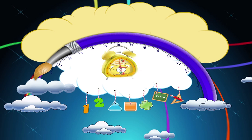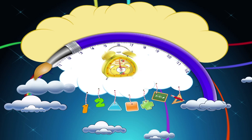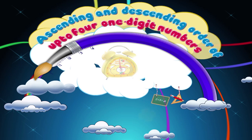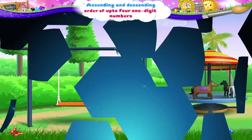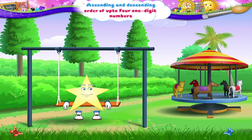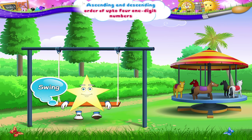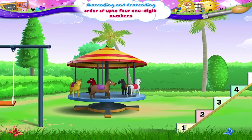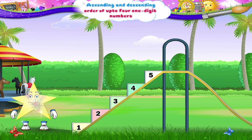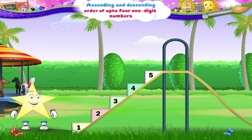Ascending and Descending Order of Up to Four One-Digit Numbers. Starry, here we are at the park. So many things to play on — swings, merry-go-rounds. I'm sure you like this slide the best. It has colourful steps with numbers on it. Have you ever been on a slide, Starry?